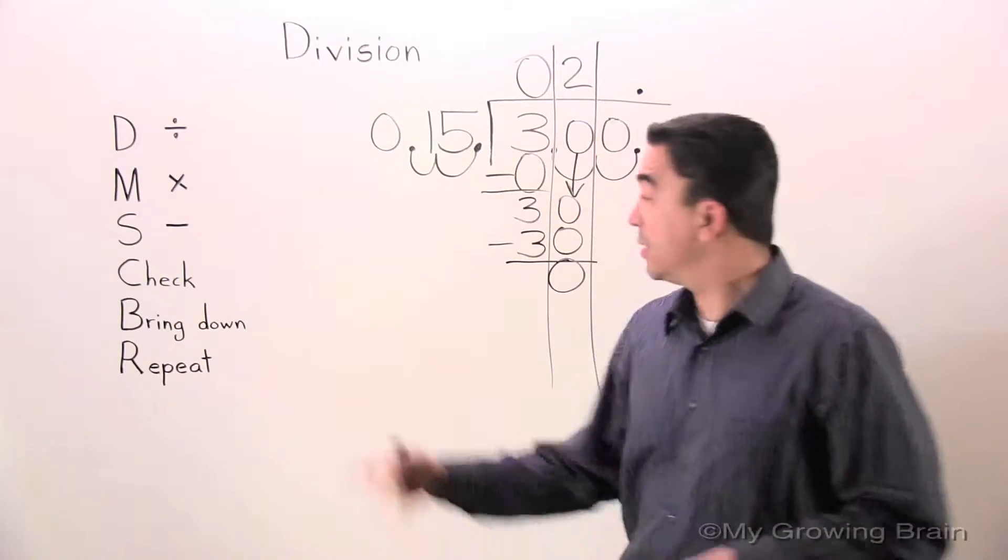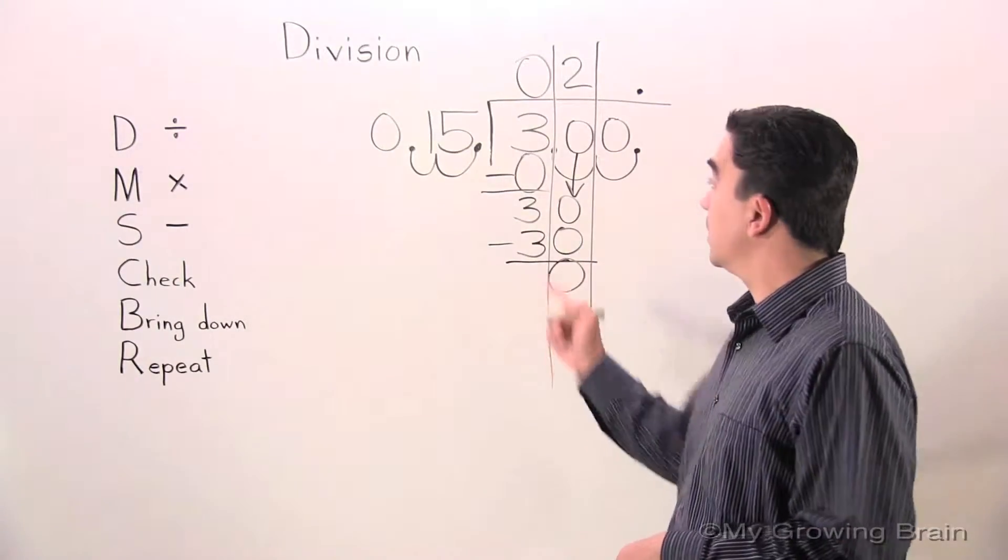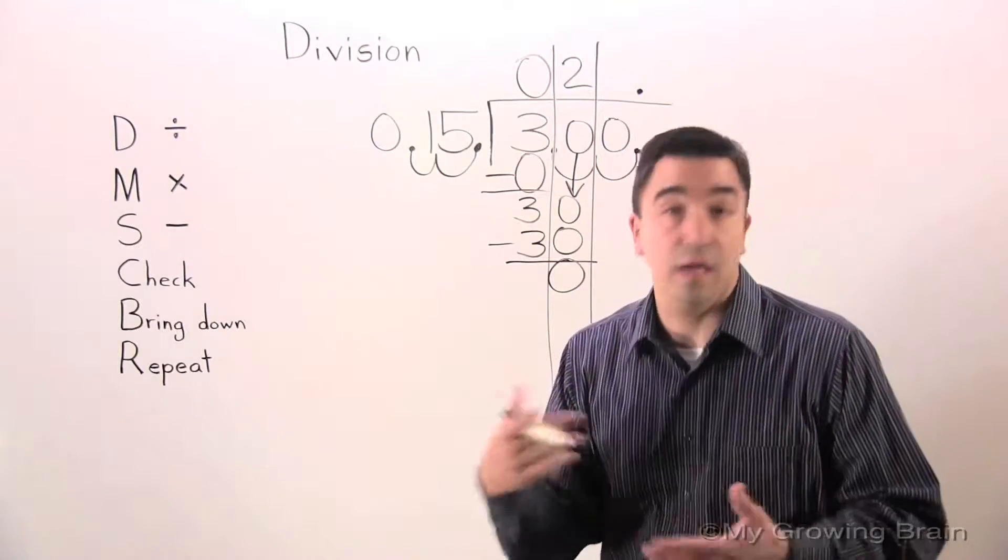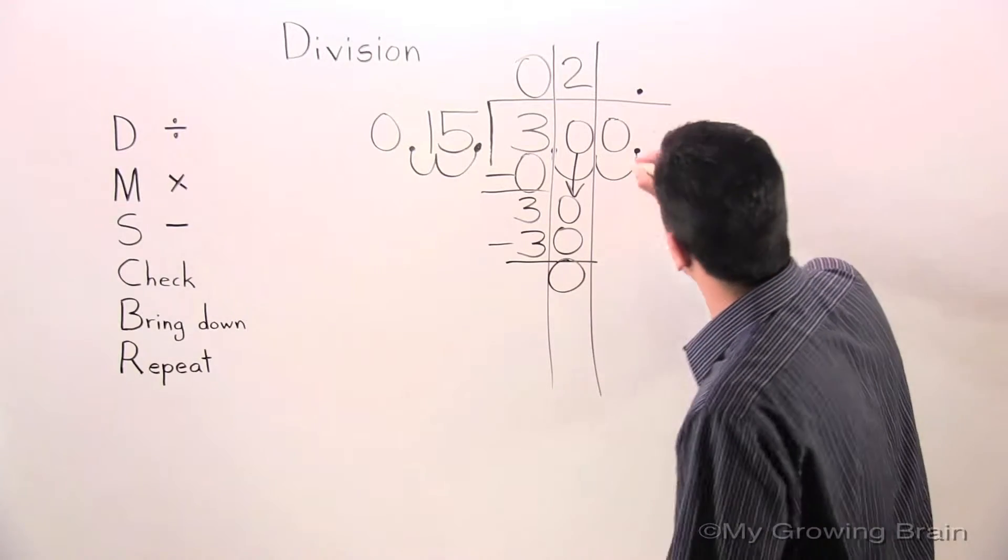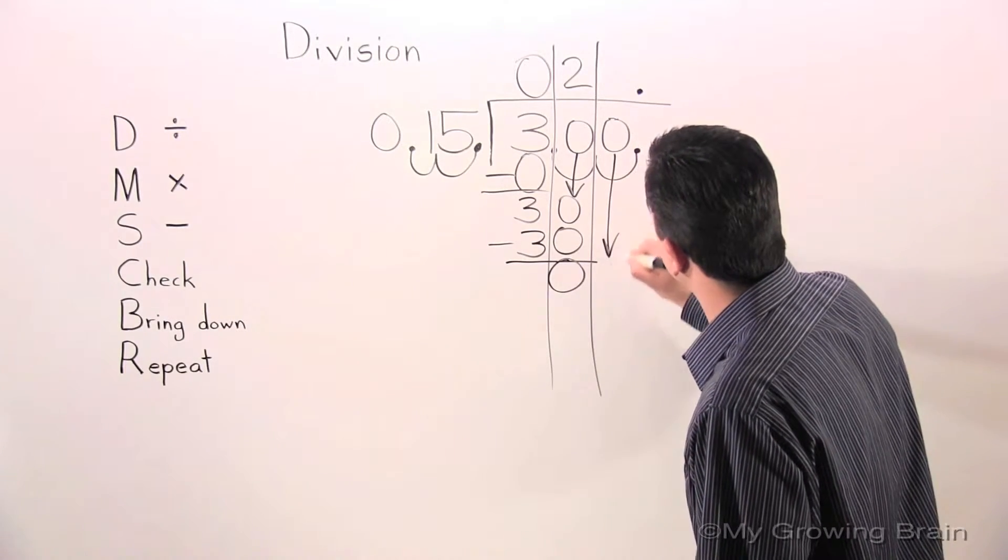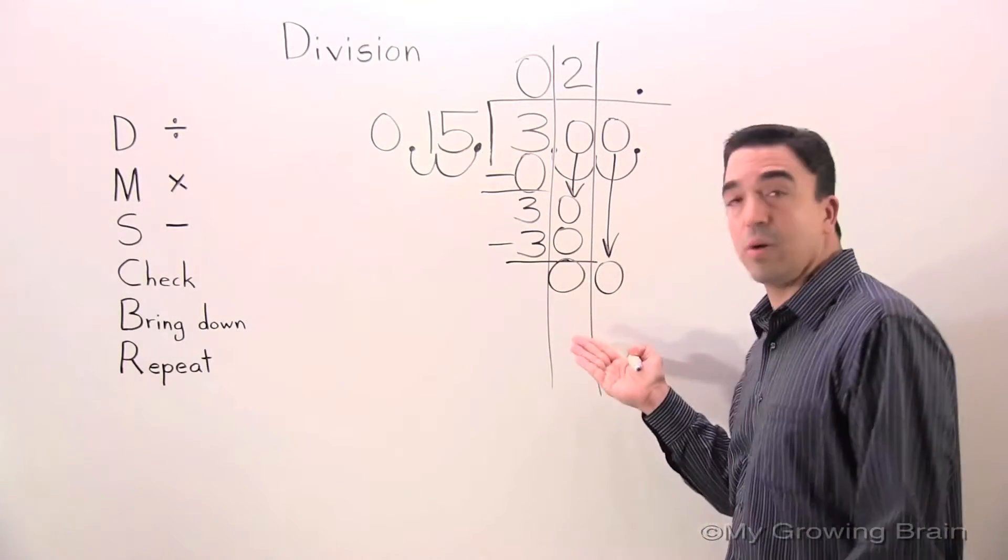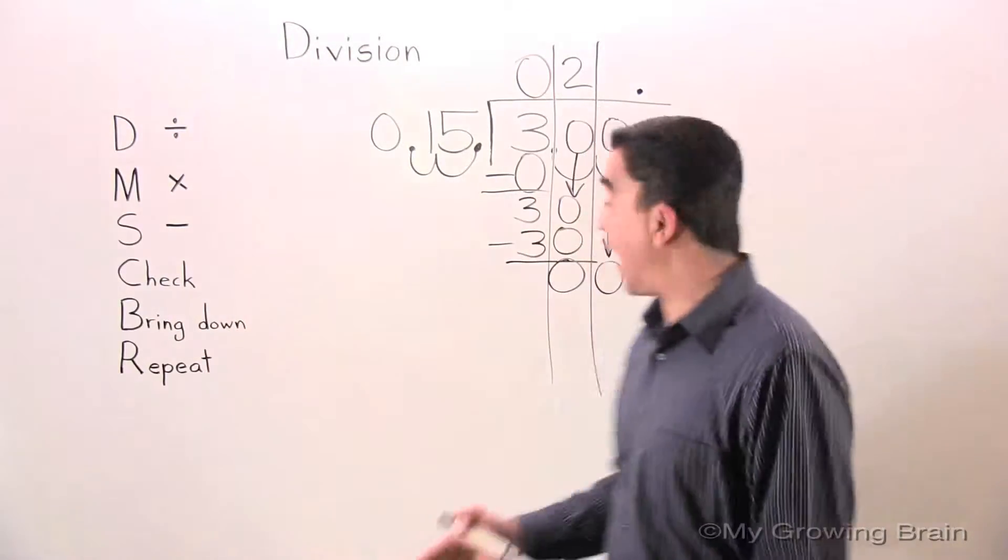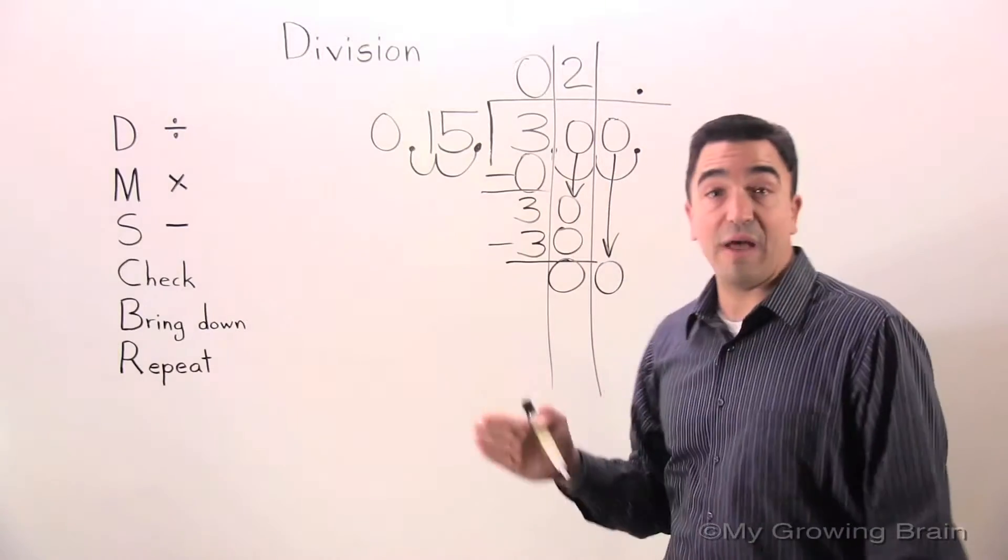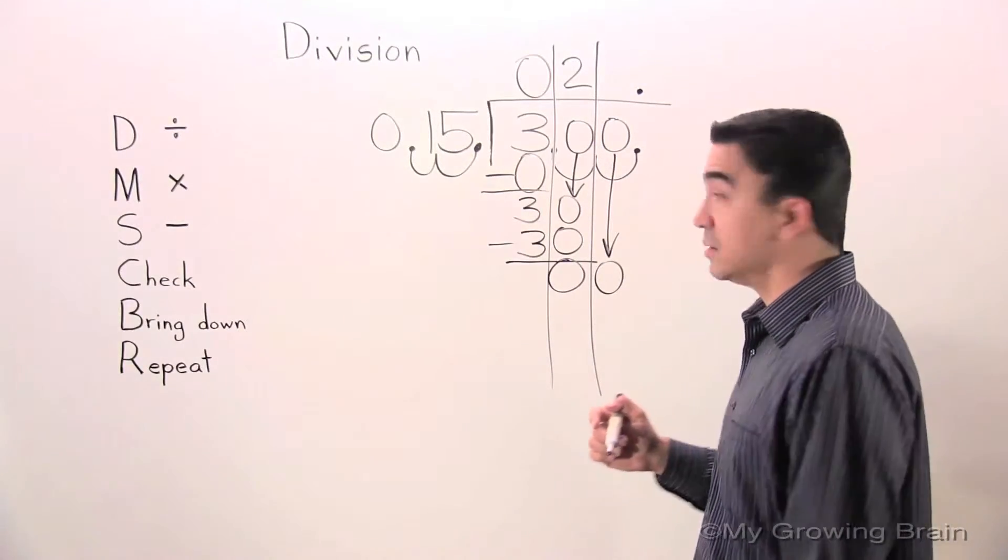Next step: Check. 0 is less than 15, keep on going. Next step: Bring down. Bring down the zero. 0. Repeat the whole process. Back to the top. Divide. Divide by 15. 0.